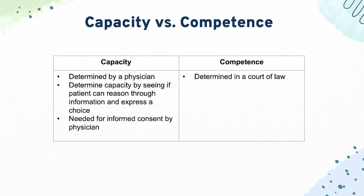Questions on the USMLE like to test capacity versus competence. Capacity is determined by a physician, either in the hospital or outpatient setting. That's different from competence, which is determined in a court of law. If a doctor walks in and sees that a patient with altered mental status can't settle on one option, that patient wouldn't have capacity. Competence would have to be determined by a lawyer and is an entirely different entity. To assess capacity, you should see if a patient can reason through information and express a choice.